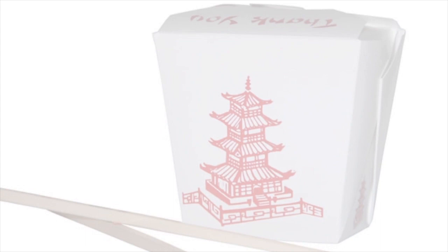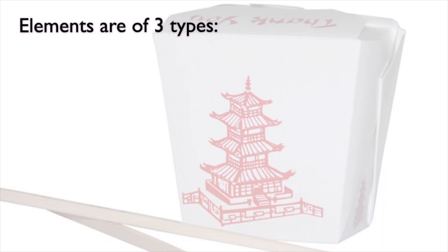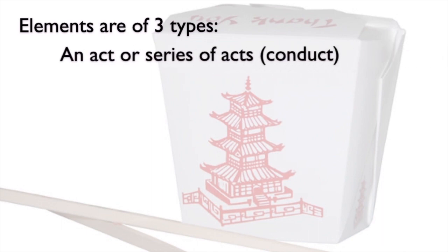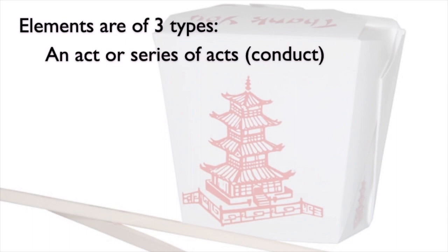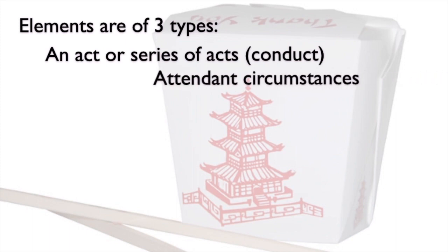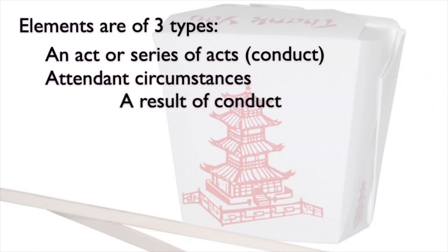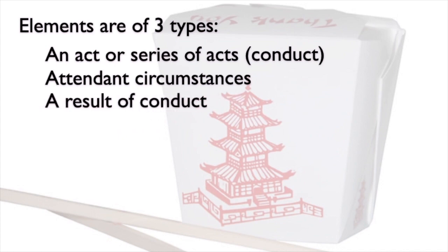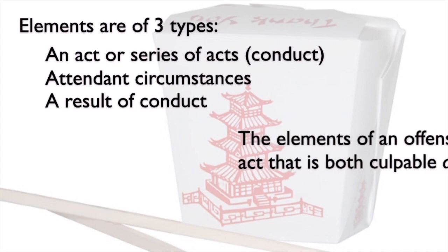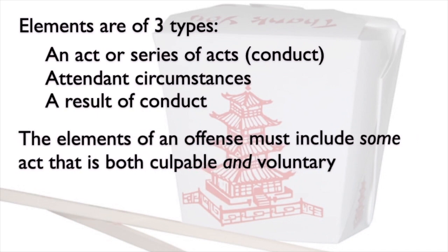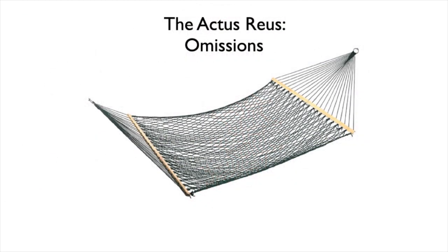Here's the takeaway from our recent sessions: elements are of three types — an act or series of acts (the conduct element), attendant circumstances, and a result of conduct. Not all criminal offenses involve a result element or attendant circumstance elements, but the elements of an offense must include some act that is both culpable and voluntary.